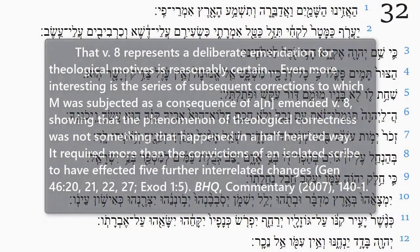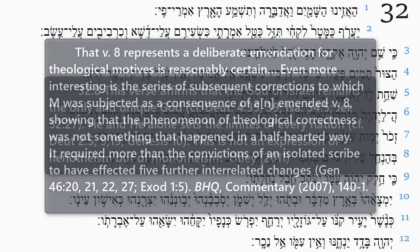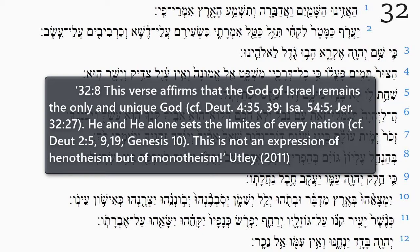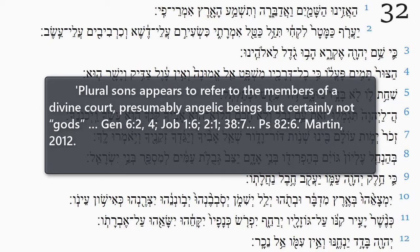Biblia Hebraica Quinta comments that verse 8 represents a deliberate emendation for theological motives is reasonably certain. The phenomenon of theological correctness was not something that happened in a half-hearted way — it required more than the convictions of an isolated scribe to have effected five further interrelated changes. One scholar comments that the verse affirms that the God of Israel remains the only and unique God, and thus this verse is not an expression of henotheism but of monotheism. Another scholar comments that the plural 'sons' appears to refer to the members of a divine court, presumably angelic beings, but certainly not gods.